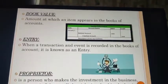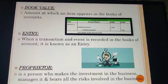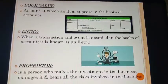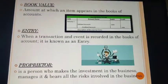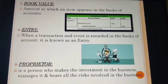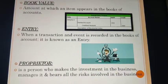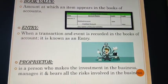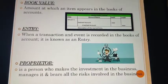Next: book value. Book value is the amount at which an item appears in the books of accounts. It represents any amount at which your item is recorded in your books of accounts.